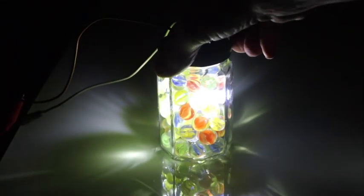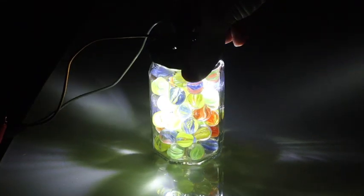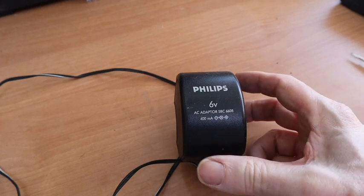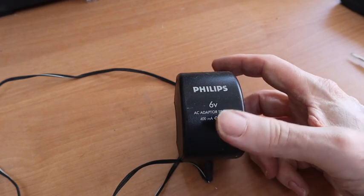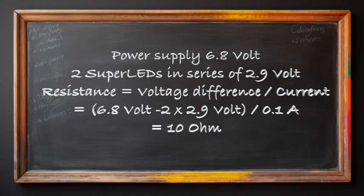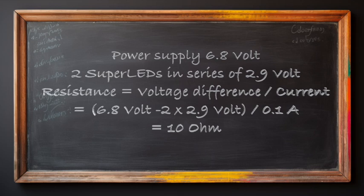Now let's build the jar of marbles with two super LEDs working on the grid. Here is a very old adapter I want to recycle. Now let's make this calculation to see which resistance we have to put in series with the LEDs.